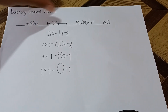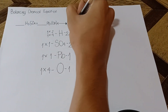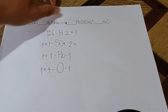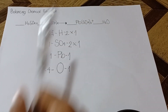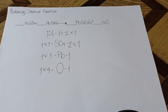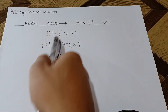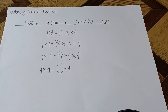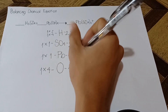For the product side: the coefficient for H, since there is no coefficient, let's assume it is 1. For SO4, since there is no coefficient, let's assume it is 1. And for Pb, since Pb and SO4 are a compound, they both share the same coefficient as SO4, so let's assume it is 1. For O also, since there is no coefficient, let's assume it is 1.